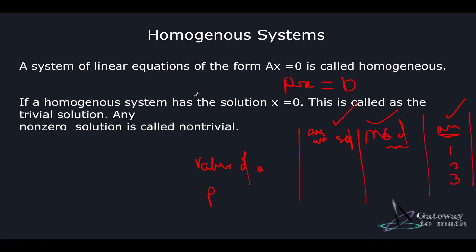A system of linear equations in the form Ax equals zero is called homogeneous. If a homogeneous system has the solution x equals zero, it is called a trivial solution. If x is a non-zero entry, it is called a non-trivial solution.